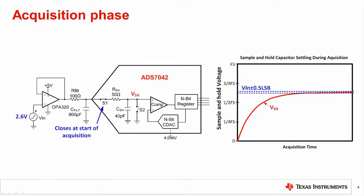A SAR data converter conversion cycle can be broken into two different phases: the acquisition phase and the conversion phase. During the acquisition phase, the goal is to charge the converter's internal sample and hold capacitor to be equal to the amplifier's output voltage. In practice, it is sufficient for the converter's internal sample and hold capacitor to settle to an accuracy of less than one-half of an LSB, as settling to a higher degree of accuracy will not improve ADC accuracy due to quantization noise. Notice that switch S1 is closed at the beginning of the acquisition phase and is opened at the end.